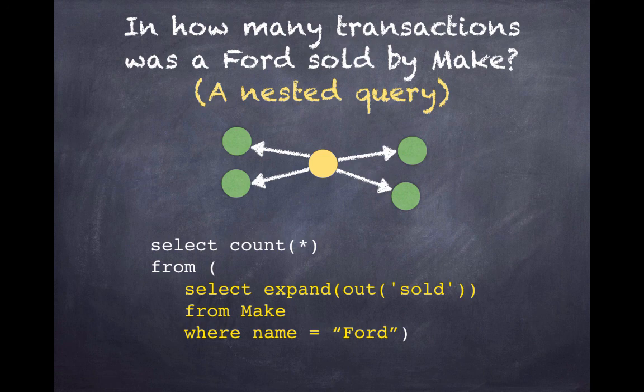We can do this saying select expand out sold from make where name is Ford. This query starts with a make named Ford and selects all of the vertices that can be arrived at by traveling outwards on a sold edge. We'll expand all of those vertices information to see one record for every transaction sold from Ford.